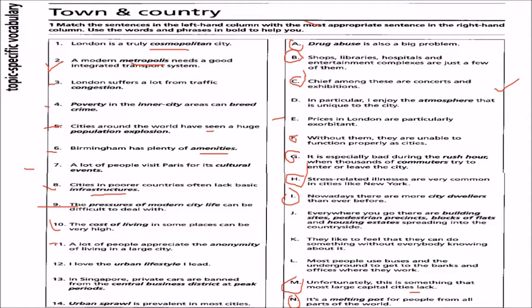Eleven: a lot of people appreciate the anonymity of living in a large city. We match it with K — they like to feel that they can do something without everybody knowing about it.